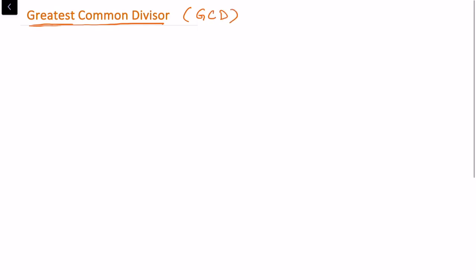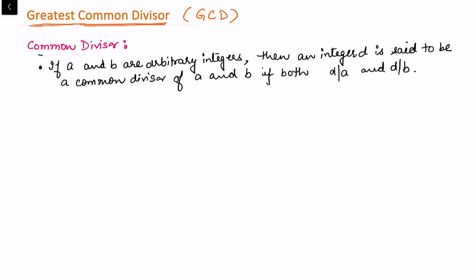In this video I'll be talking about greatest common divisor. Before I write the definition for greatest common divisor, or in short GCD, let us see some facts about the common divisor. We define a common divisor for two integers. Let a and b be two arbitrary integers, and let d be an integer which is said to be the common divisor of a and b if d divides a and d divides b.